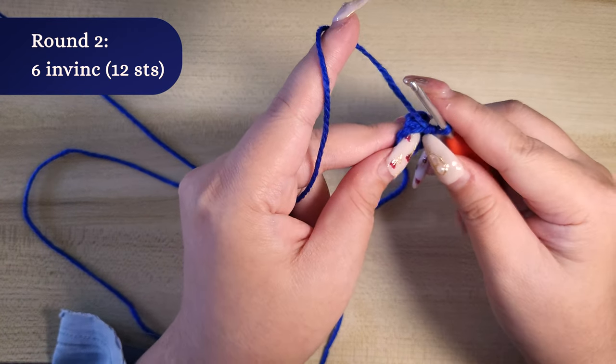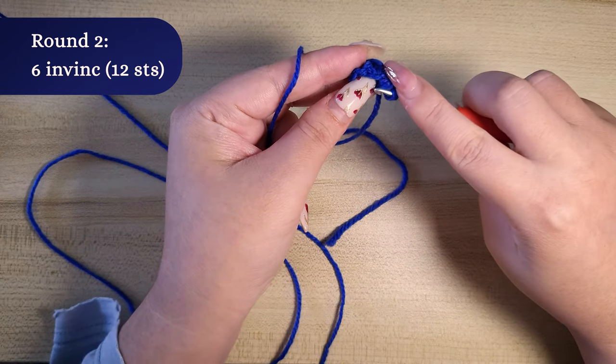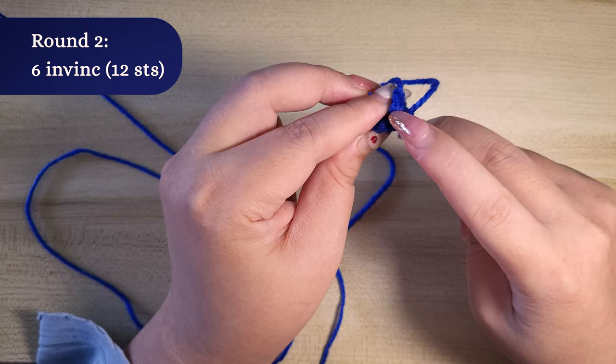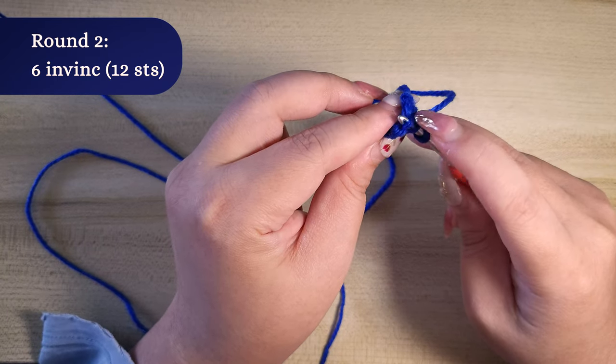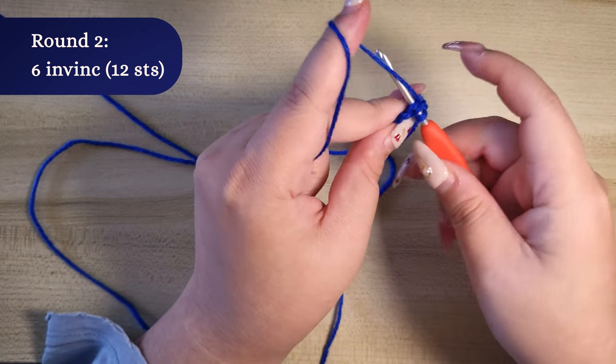To do invisible increase, we will be working on the front loop only and then both loops to do the increase. I have linked my step-by-step invisible increase tutorial on the top right hand corner if you need more help.